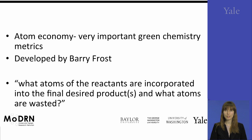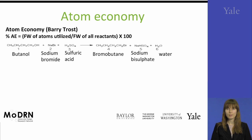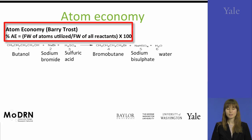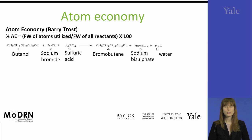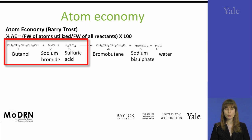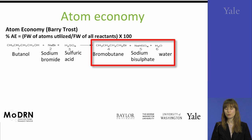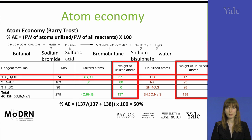The best way to illustrate atom economy is through an example. Atom economy is calculated by dividing atoms utilized by atoms which are present in all the reactants, times 100. When we have butanol that reacts with sodium bromide and sulfuric acid, it is going to give us bromobutane, sodium bisulfate, and water. The way to calculate atom economy is to look at what atoms from butanol have been incorporated into bromobutane.